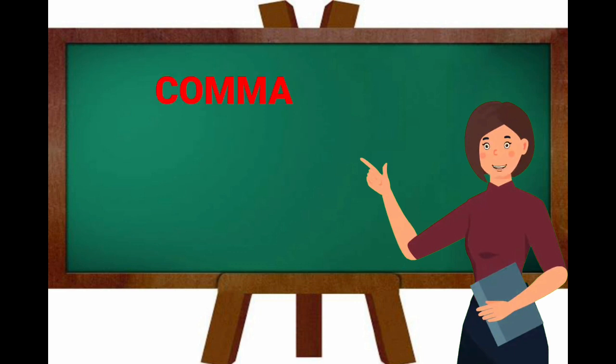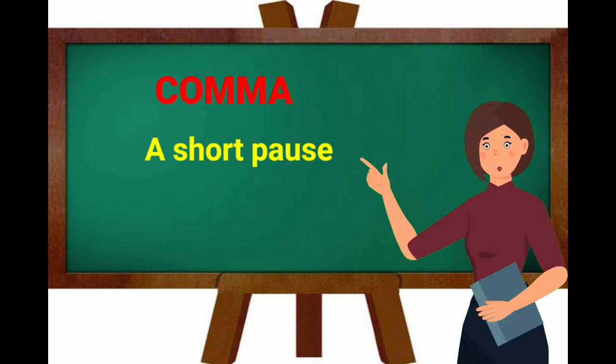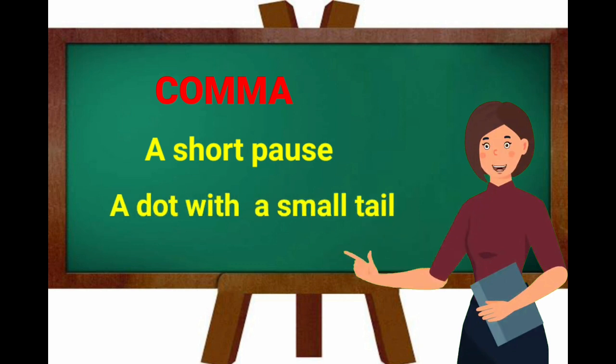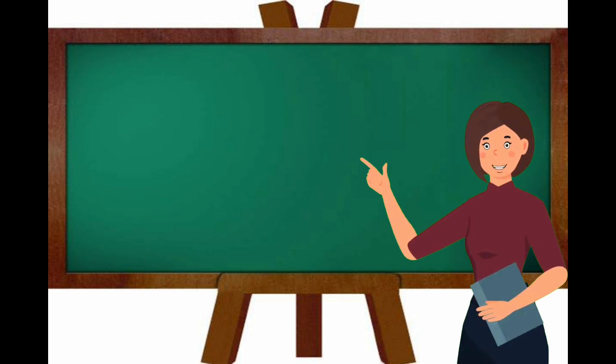Next, comma. Comma is a short pause within a sentence or after a clause. It means the writer is talking about two or more things in the sentence. A dot with a small tail is used as the comma symbol.